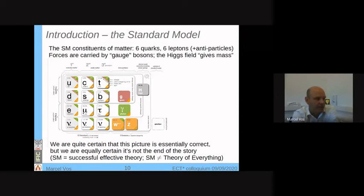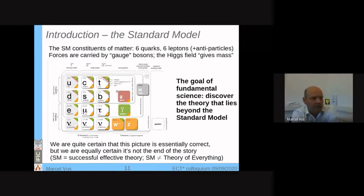We are quite certain that this picture is essentially correct. But we're also certain it's not the end of the story. The standard model is both a successful theory that describes nearly all current observations, but it's not the theory of everything. It doesn't include gravity, for one. It can't explain some phenomena we see in cosmology, rotation of galaxies. So there must be more to it.